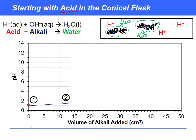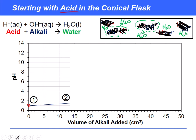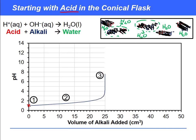There comes a point when enough alkali has been added to neutralise all the H⁺ ions — they've all become H₂O. Now the solution contains entirely water molecules, giving a pH of 7. As the H⁺ ions start to run out, the pH rises very steeply until we reach what is known as the equivalence point — the point of very steep rise on the pH curve.